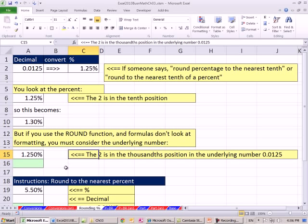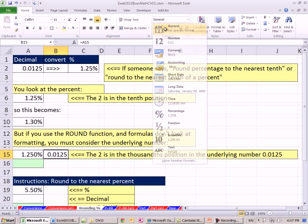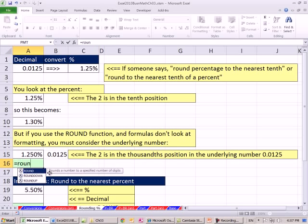But now, what if you're given this right here and you want to officially do it in a formula? Well, here's the deal. If you use the round function, the formulas don't look at formatting. You must consider the underlying number. So the underlying number, and I'm going to do this. It sucked the formatting, but I'm going to wipe it away. If you were going to use the round function to round that, formulas don't look at the formatting. They're looking at the underlying number. So even though the original statement says round to the nearest tenth of a percent, you have to respect that.